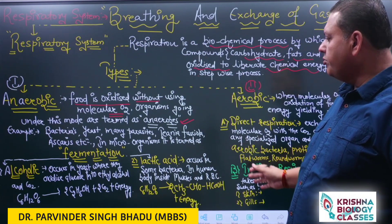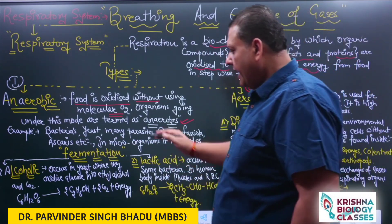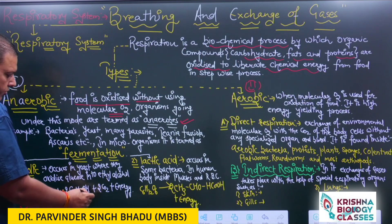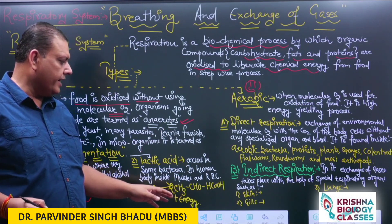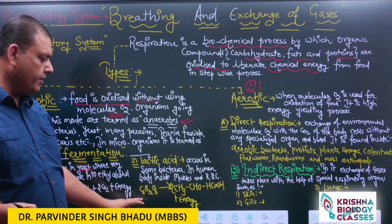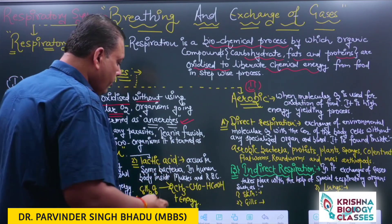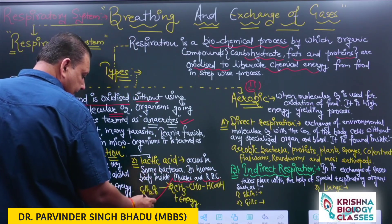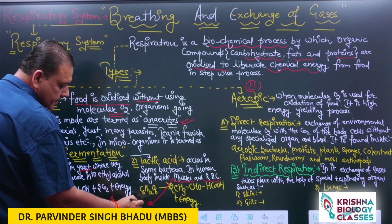On the basis of the by-product formed, fermentation may be alcoholic fermentation or lactic acid fermentation. In alcoholic fermentation, due to oxidation of glucose, ethyl alcohol is formed — this commonly occurs in organisms like yeast. Lactic acid fermentation is anaerobic respiration in which lactic acid is formed as a by-product. This lactic acid fermentation also takes place inside the human body in muscles during vigorous exercise.